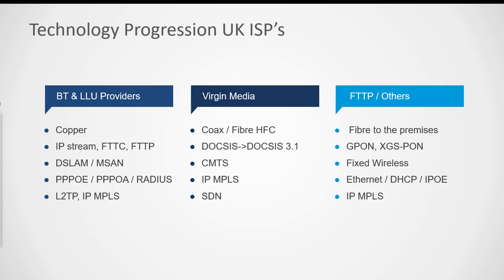On the FTTP side, fiber-to-the-premises networks have seen the emergence of major players like CityFibre in recent years. FTTP is mainly delivered using G-PON and XGS-PON technologies. Fixed wireless providers have also appeared alongside these. Ethernet is the main delivery format over G-PON, with DHCP and IP as the protocols used. We'll continue the discussion of the ISP technology revolution in the UK in our next video — thank you for watching.